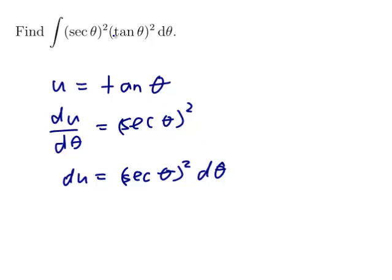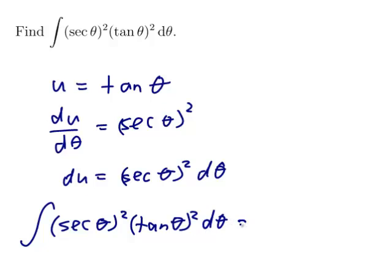So now I've got the sec theta squared d theta. That's my du and my u is tan theta. Okay, so the integral of sec theta squared tan theta squared d theta is the integral of tan theta becomes a u and it's still squared, and the sec theta squared d theta is du.